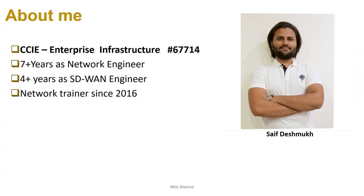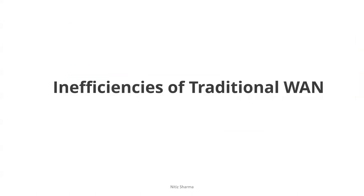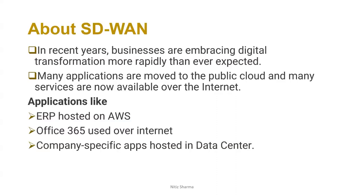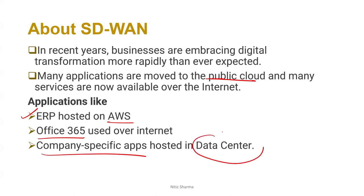Before we talk about traffic engineering — which is specifically the feature related to SD-WAN for today — let's talk about why we actually have SD-WAN. To understand that, we'll look at the inefficiencies of traditional WAN. In recent years, businesses have started moving more to the cloud. Many applications have moved to the public cloud, such as ERP hosted on AWS, Office 365 used over the internet, and company-specific applications hosted in the data center.